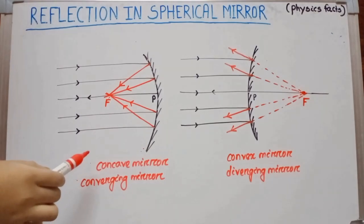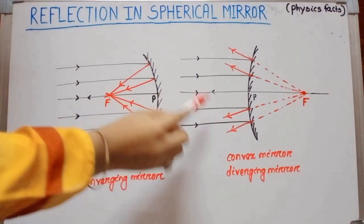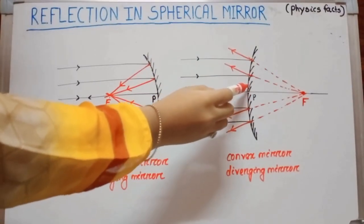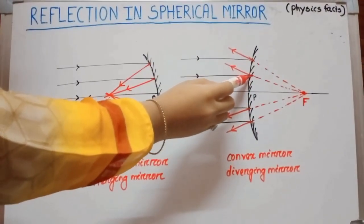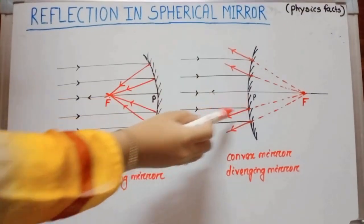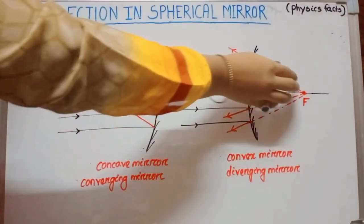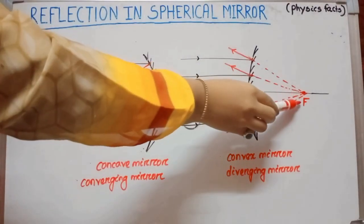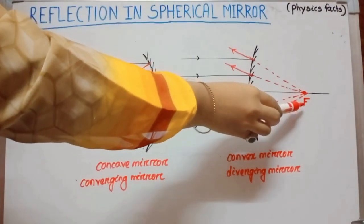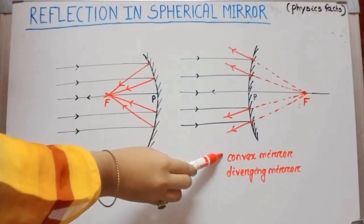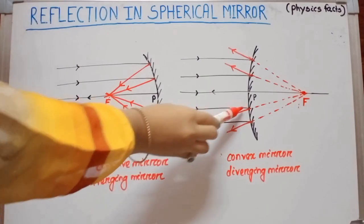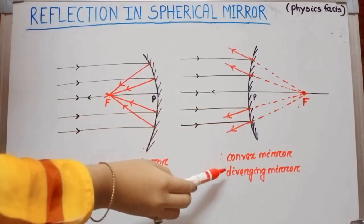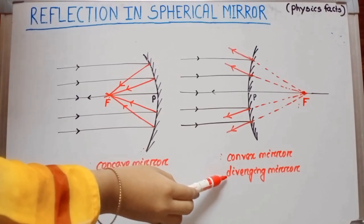Whereas in case of a convex mirror, the beam of light parallel to the principal axis, after reflection, diverges. But the diverged rays appear to come from one point — that point is called the focus. In case of a convex mirror, the rays diverge, so a convex mirror is also known as a diverging mirror.